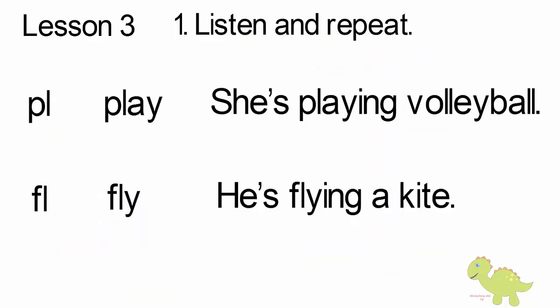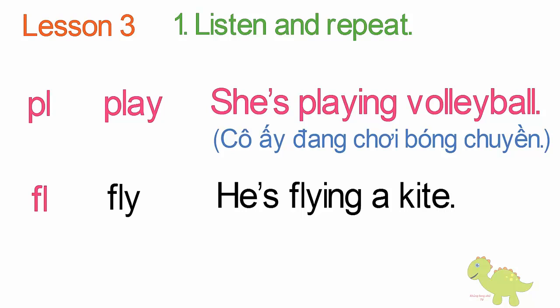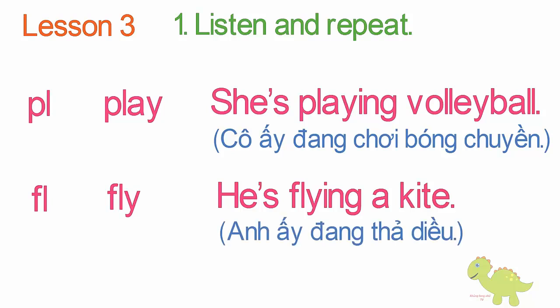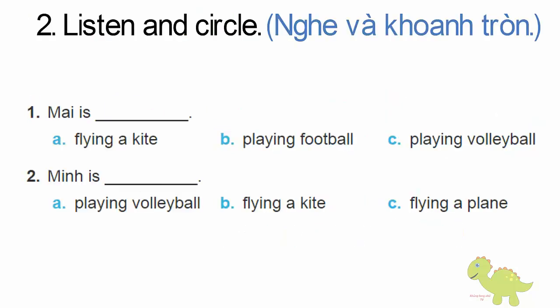Page 62, Lesson 3, Activity 1. Listen and repeat. Play — she's playing volleyball. Fly — he's flying a kite. Page 62, Lesson 3, Activity 2. Listen and circle. 1. My is playing volleyball. 2. Ming is flying a kite.